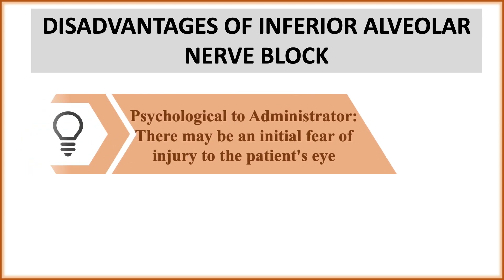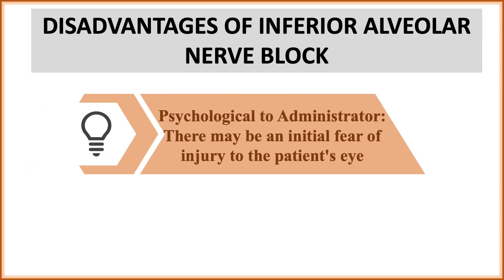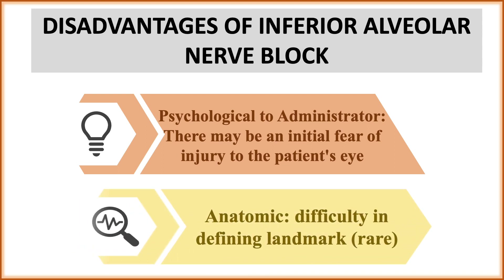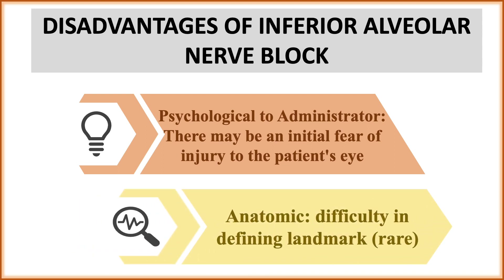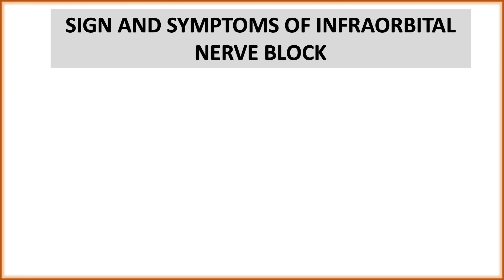Disadvantages of the infraorbital nerve block: the main one is psychological — there is a fear of injury to the patient's eye. The second is anatomical — difficulty in defining the landmark. However, this is very rare; if you have knowledge of general anatomy, it is not very difficult to locate the infraorbital foramen.